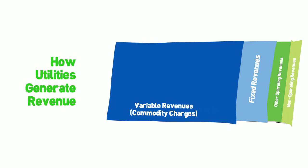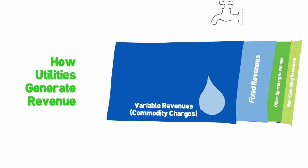As the name suggests, fixed revenues are not dependent on the volume of water used or wastewater discharged by the customer. Fixed revenues typically come from monthly base or service charges. Variable revenues, on the other hand, are linked to the volume of water used or wastewater discharged by customers, derived from the rates applied to these volumes. The balance between fixed and variable revenues is unique for each utility, based on rate structure design, pricing level, and the water demand profile of the customer base. But under the predominant business model of most utilities, they are collecting much more variable than fixed revenue.